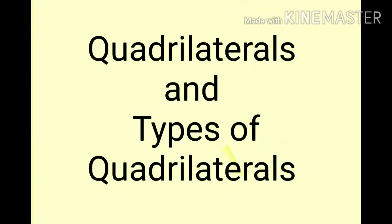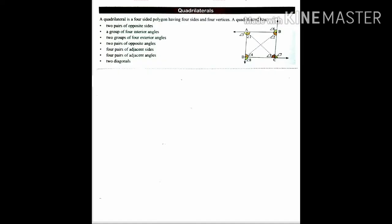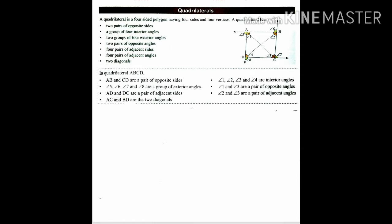Good morning everyone, welcome to our new topic: quadrilaterals and types of quadrilaterals. A quadrilateral is a four-sided polygon having four sides and four vertices. A quadrilateral has two pairs of opposite sides, four interior angles, two groups of four exterior angles, two pairs of opposite angles, and four pairs of adjacent sides.